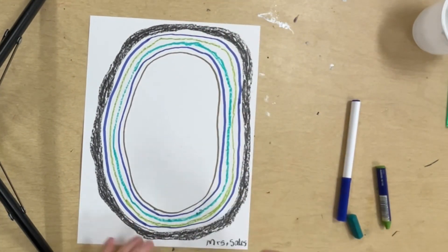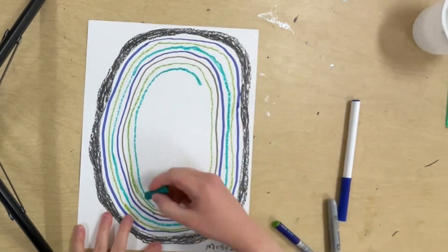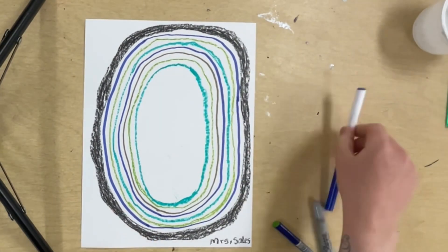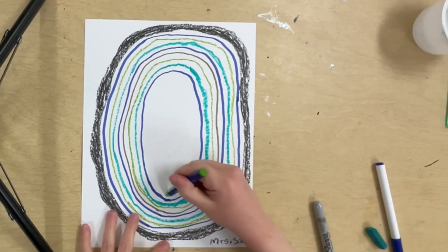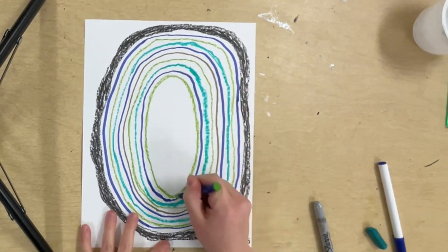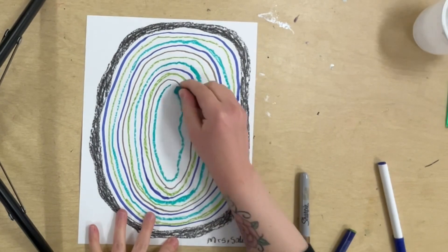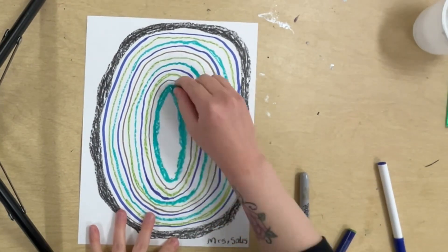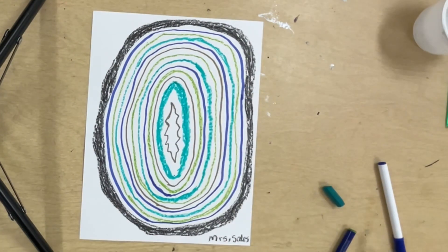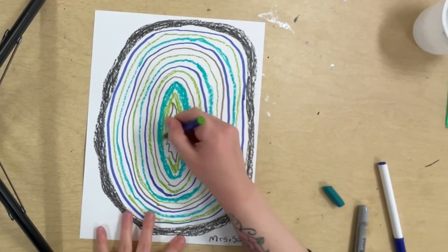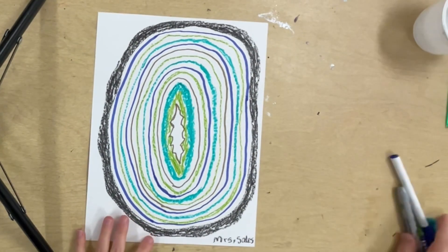You don't have to go in a specific pattern with your drawing materials, but you certainly can. I'm going to make the last ring on the inside a little jagged, because that looks like a real geode, kind of broken on the inside like that.